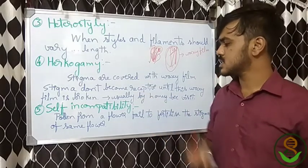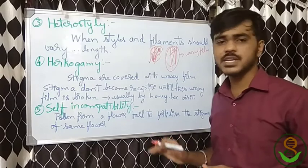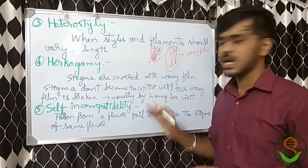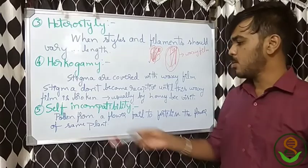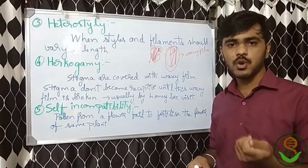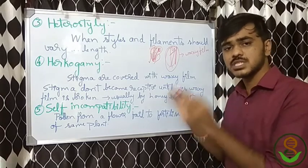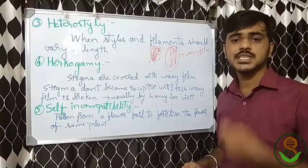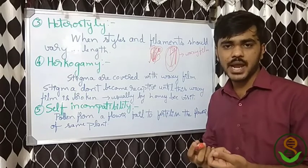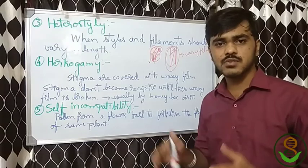Self-incompatibility is a very important tool. Both self-incompatibility and male sterility will have detailed explanations in further classes. The definition of self-incompatibility: pollen from a flower fails to fertilize the flower of the same plant — that is, the inability of the pollen to fertilize the flower of the same plant. The best example is Nicotiana species.